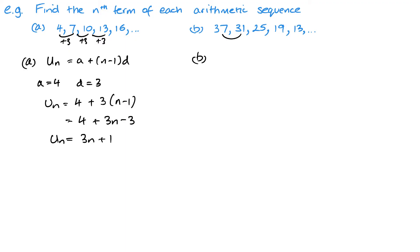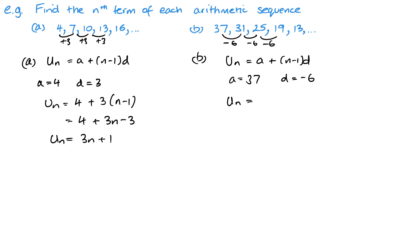For sequence B, we can see this is decreasing by 6 each time, and A = 37. It's a good habit to write down the formula for the nth term each time, as it helps you remember it. D = −6 — don't forget the negative as it's decreasing. So we get 37 − 6(N − 1), which expands to 37 − 6N + 6, giving 43 − 6N as the nth term.